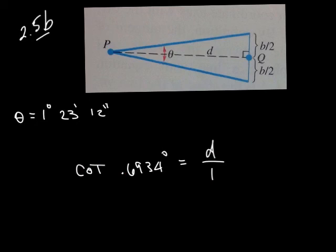So it's a faster way of doing it using cotangent, but it's not more correct. Either way is fine.